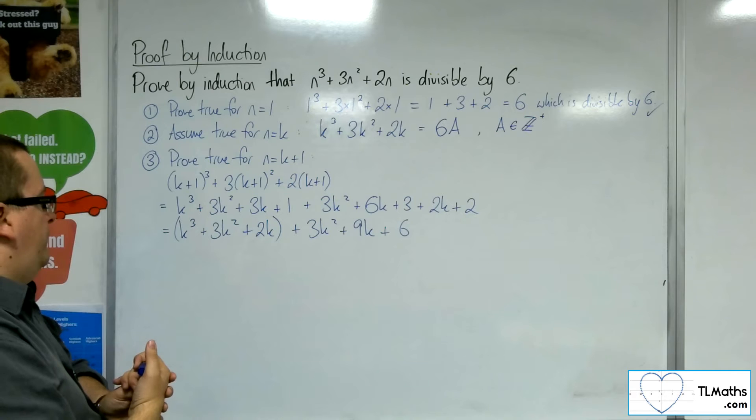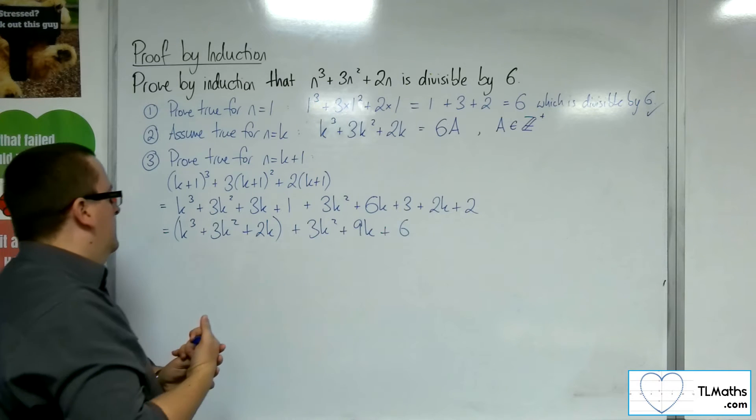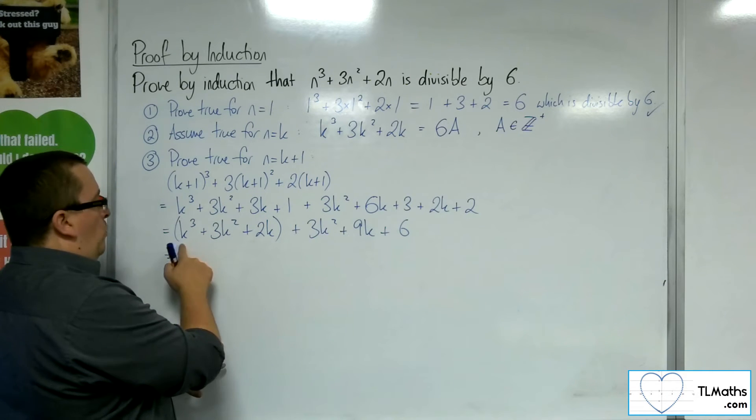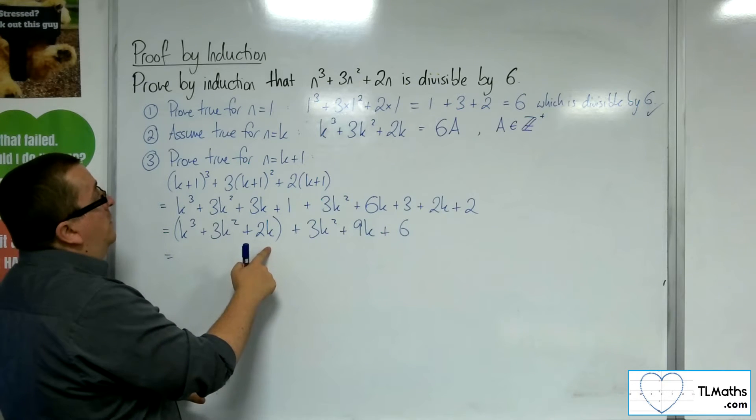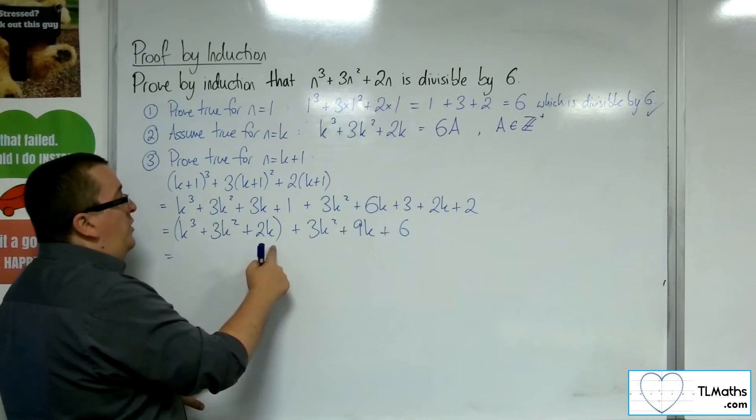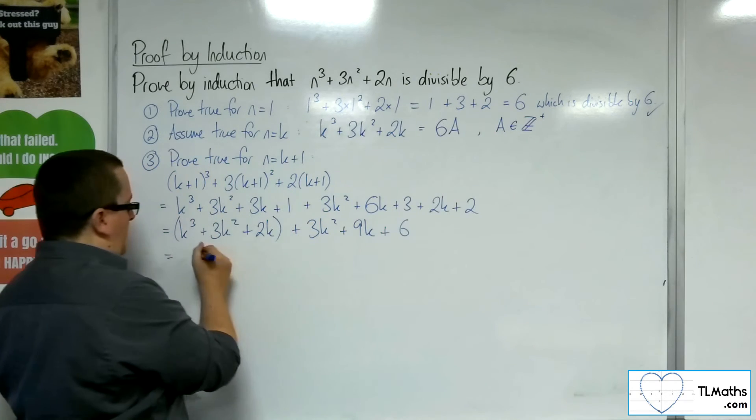So, what I've got here is that I've assumed that it's true for n equals k. So, I've assumed that that is equal to 6 lots of a. So, let's replace that with 6 lots of a.